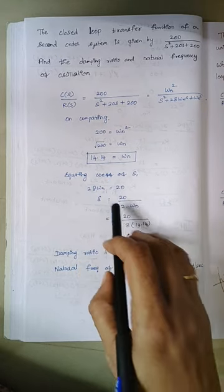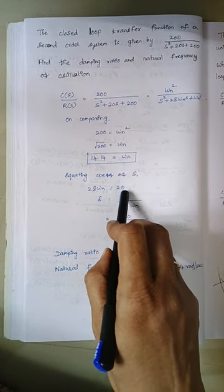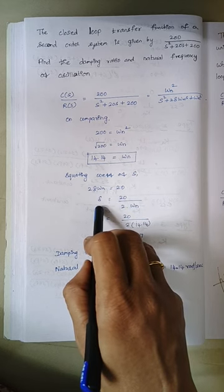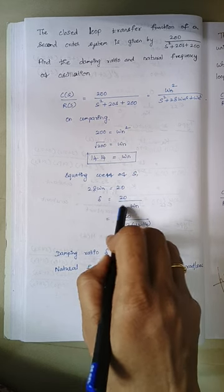Just when you compare, here 2 zeta omega n is equal to 20. So from this expression calculate the value of zeta. So 20 by 2 into omega n.